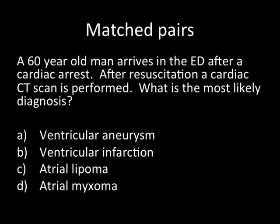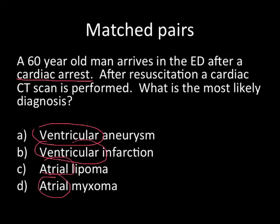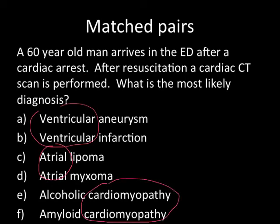One way to avoid this cluing is to use matched pairs — for example, have 'ventricular' appear twice and 'atrial' appear twice, so there's no cluing toward one over the other. Additionally, you can remove the specific term from the stem entirely — replacing 'ventricular fibrillation' with 'cardiac arrest,' which provides equally useful clinical information without the clue. When needed, you can use three matched pairs — ventricular, atrial, and cardiomyopathy all equally balanced. These answers are also homogeneous diagnoses that pass the cover test.